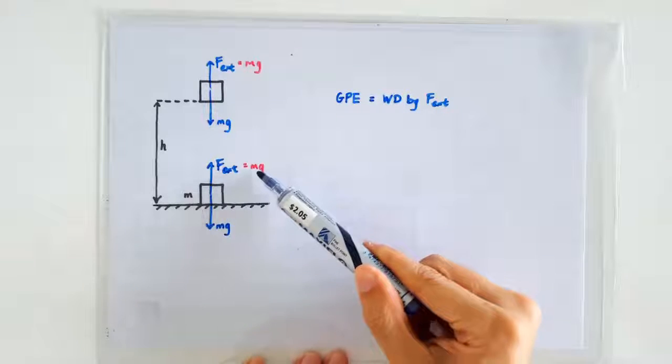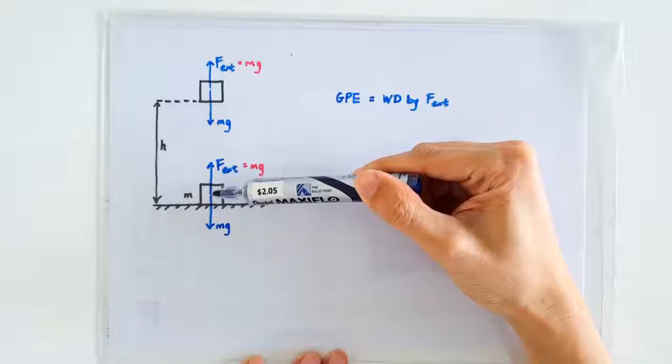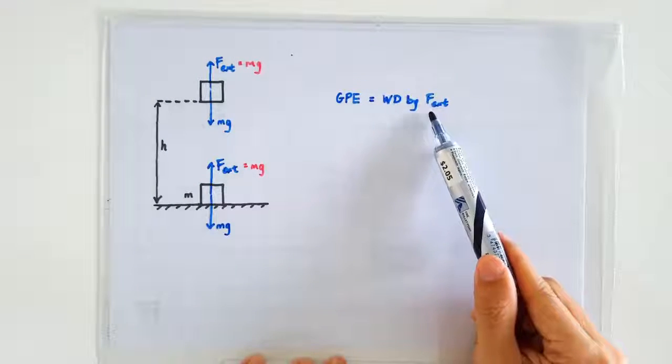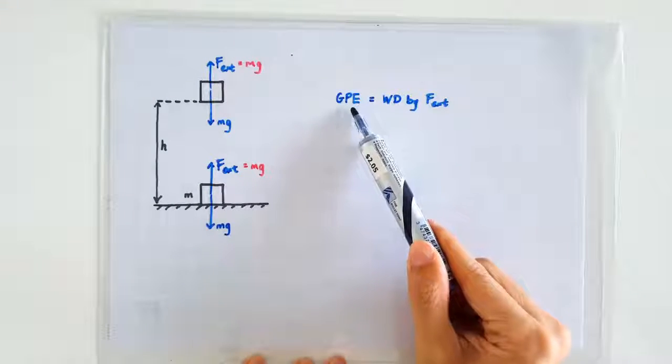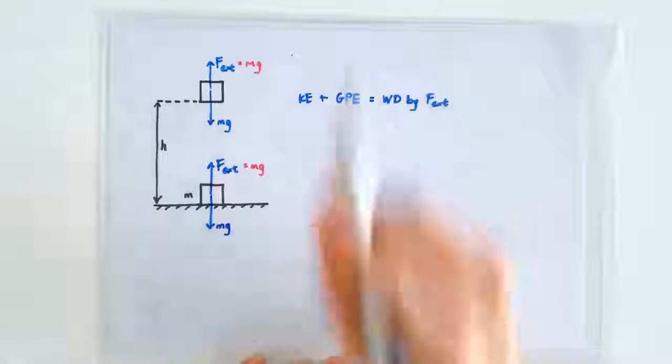If the external force is larger than Mg, then the mass will accelerate on the way up. And the work done by the external force will not be just the GPE. It will also include some KE gained by the mass.